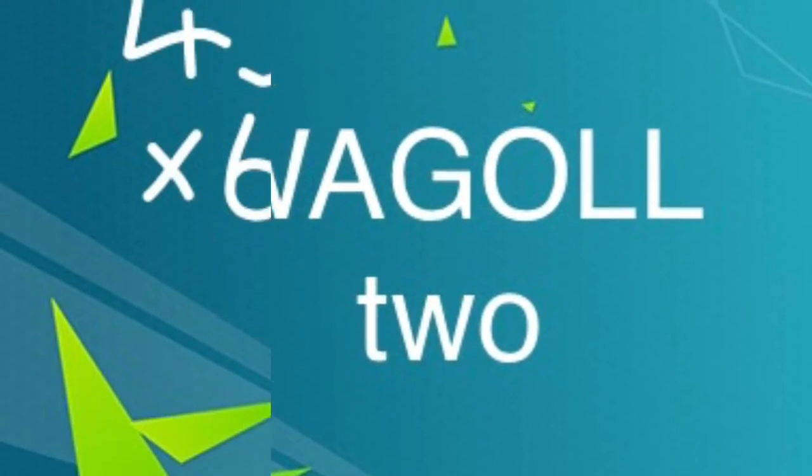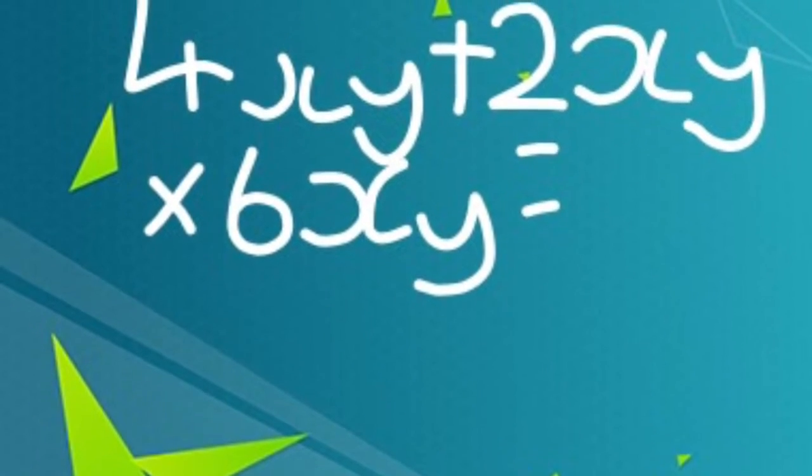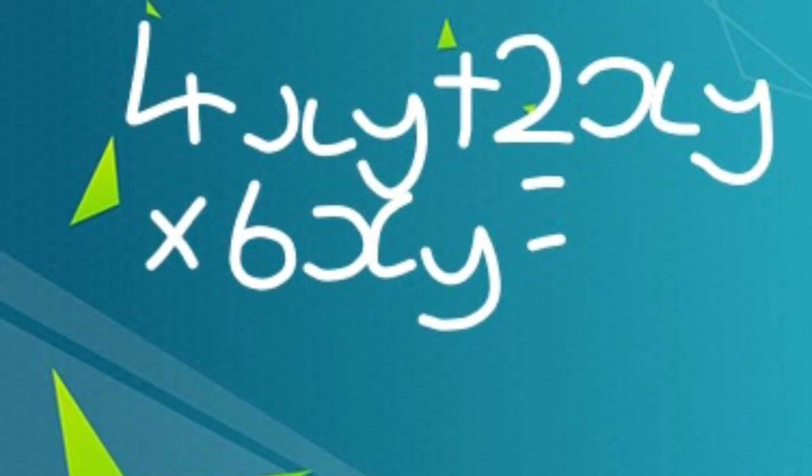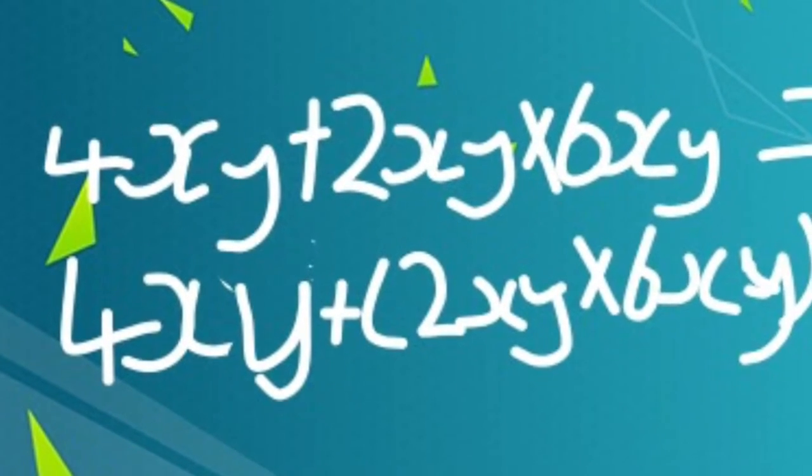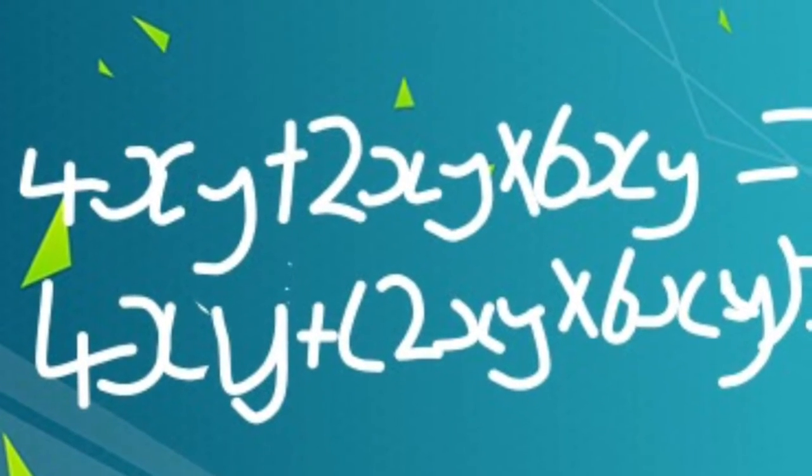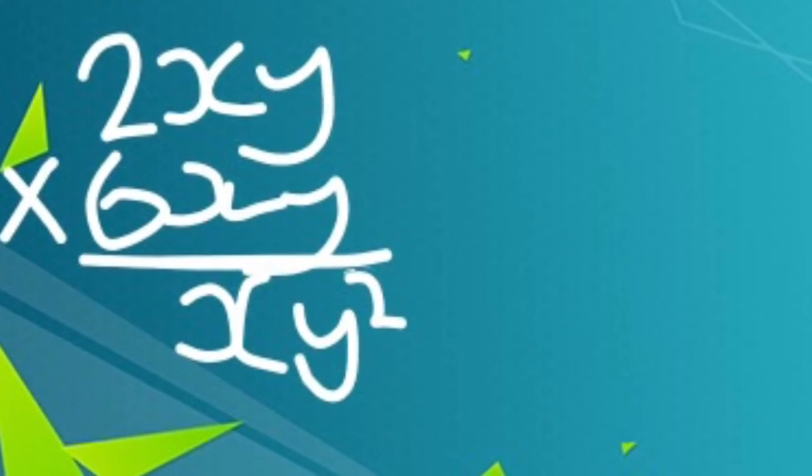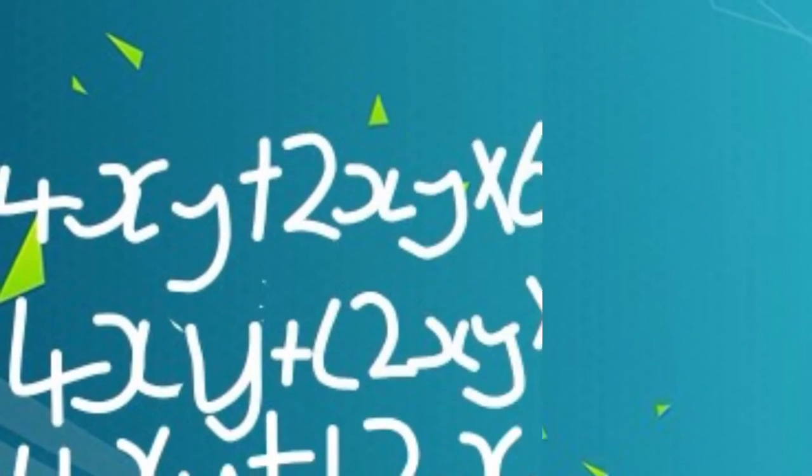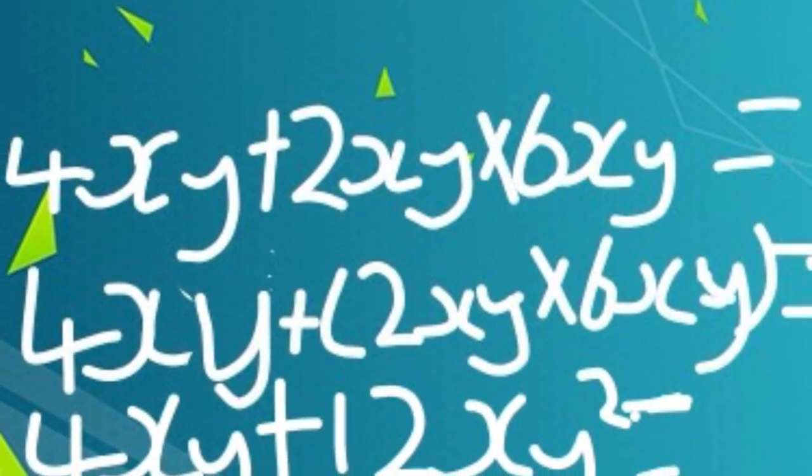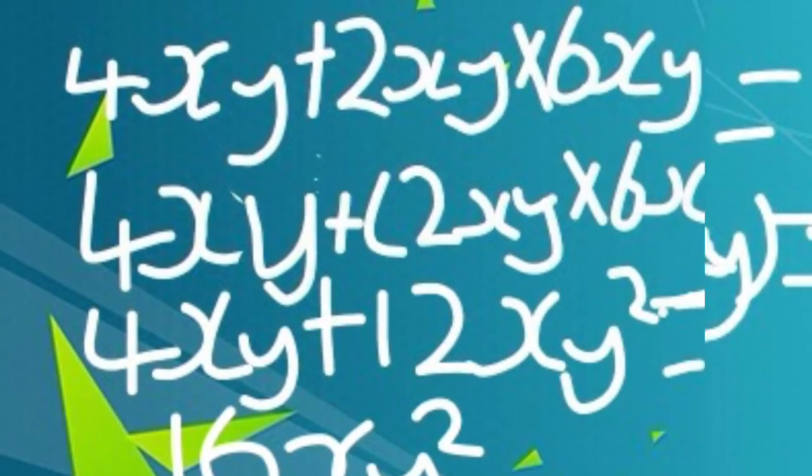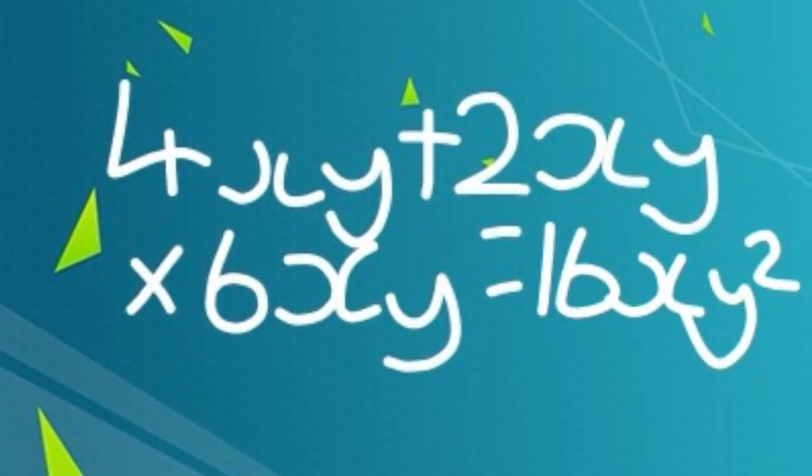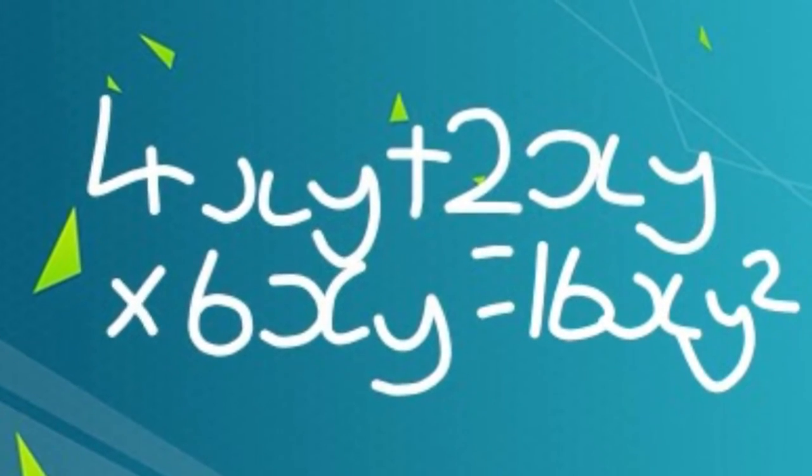Waggle 2. 4xy add 2xy times 6xy. 4xy add brackets 2xy times 6xy. xy times xy equals xy squared. 6 times 2 equals 12. Carrying over equals 12xy. 4xy add 12xy squared equals 16xy squared. The answer is 16xy squared.